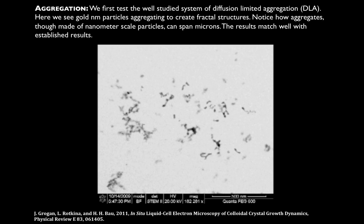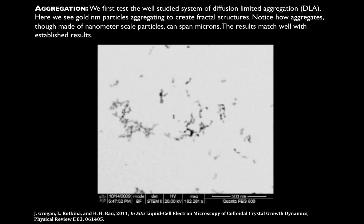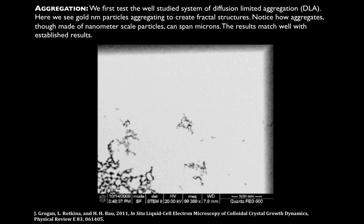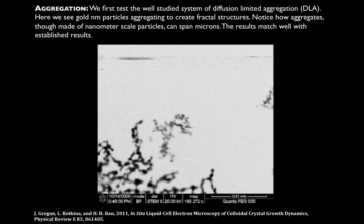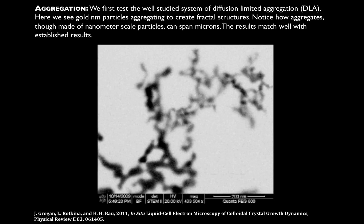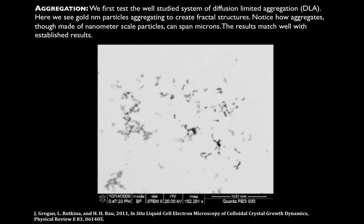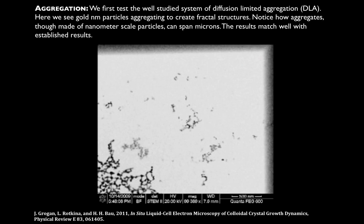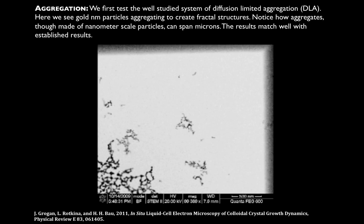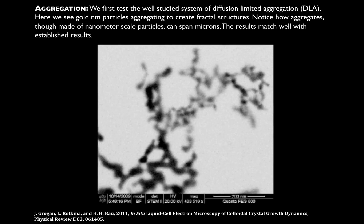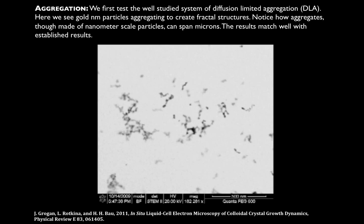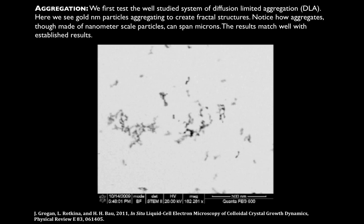When we first created this device we wanted to make sure that we could actually see something. The first system we looked at, Joe Grogan looked at 5 nanometer gold particles in solution, and much to our enjoyment we were able to find classical diffusion-limited aggregation of these gold nanoparticles. We didn't know exactly why they were aggregating at the time because they should be charge-stabilized particles, but we did notice that the aggregation was as you would expect for diffusion-limited aggregation.